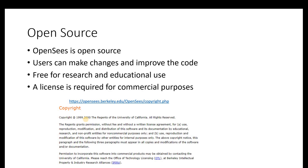OpenSees is an open source platform, which means users can make changes and improve the code. It's free to use for research and educational use. To incorporate OpenSees within commercial software requires a license. So open source doesn't mean do whatever you want with it for whatever purpose — for commercial purposes, a license is required.